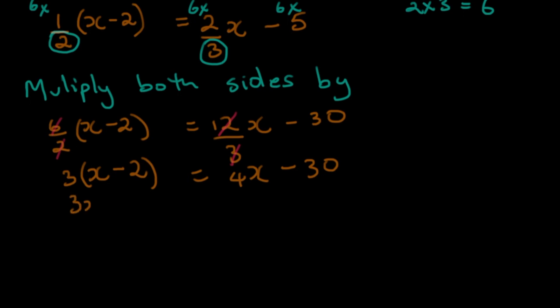The next step involves expanding the bracket. So that's gonna be 3X minus 6 and that's gonna be equal to 4X minus 30.